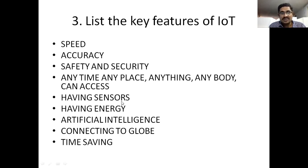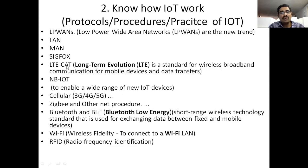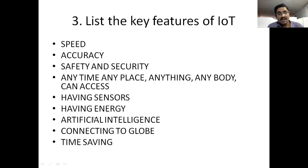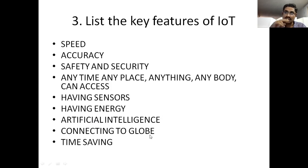Another feature: having sensors. Technologies like LAN, MAN, WAN, SIGFOX, LTE, Cellular, Bluetooth, Wi-Fi — all these things have sensors and energies. Next, these are all based upon artificial intelligence. Another special feature is connecting to the globe — individuals connected to the globe. And we have saved time. These are the key features of Internet of Things.